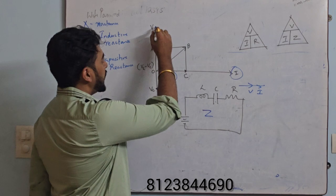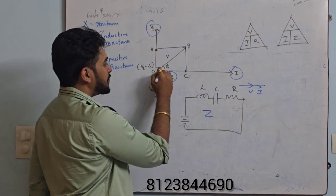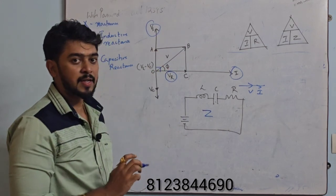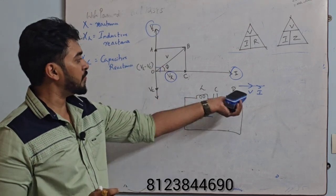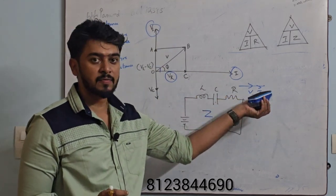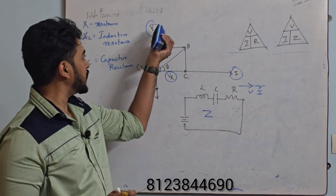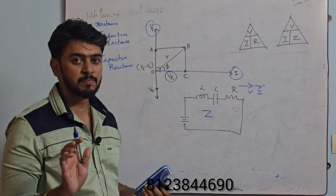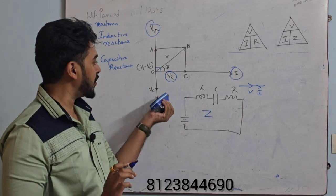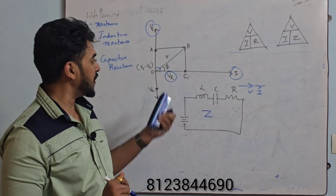In inductor, the voltage leads current by 90 degrees. And in capacitor, voltage lags current by 90 degrees. So how to remember: for resistor, voltage and current are in phase, and for inductor, voltage leads current by 90 degrees. If you remember this particular technique, then we need not even remember about capacitor.